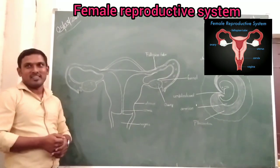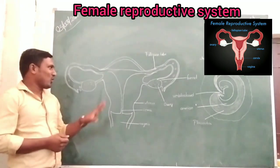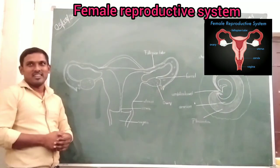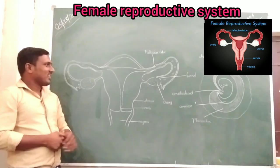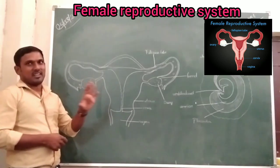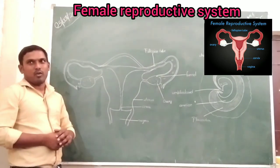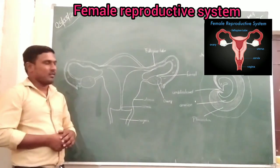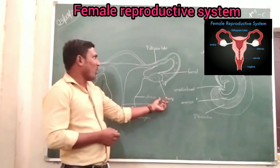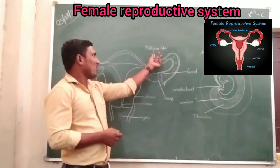Today, we will discuss the female reproductive system. The female reproductive system is mainly contained in four parts. The first one is called the ovary.